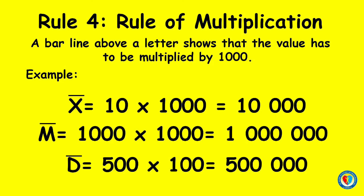Rule number four: rule of multiplication. A bar line above a letter shows that the value has to be multiplied by 1,000. Examples: X-bar is equal to 10 times 1,000, which equals 10,000. M-bar is equal to 1,000 times 1,000, which is equal to 1,000,000. D-bar is equal to 500 times 1,000, which is equal to 500,000.